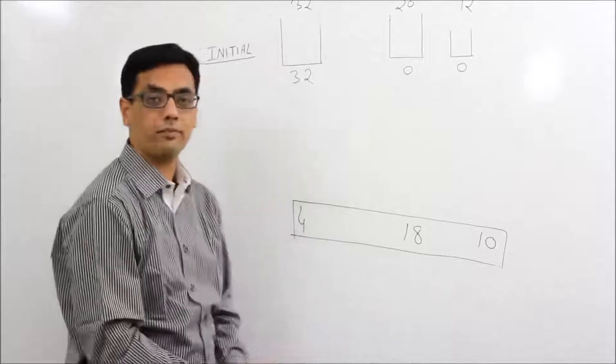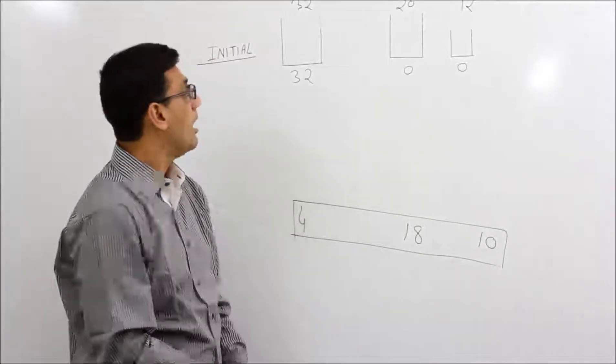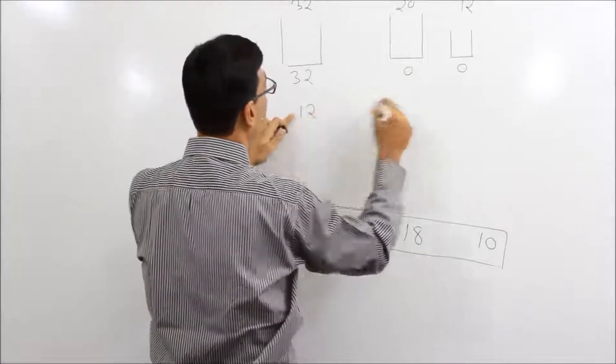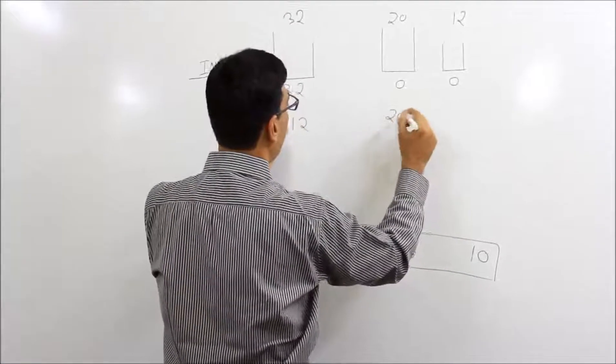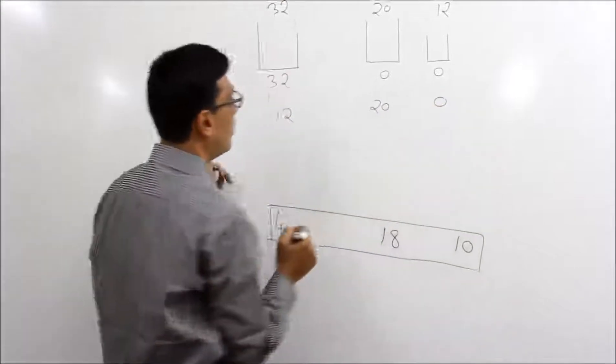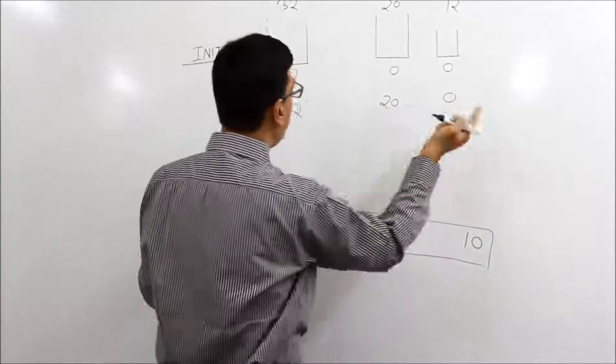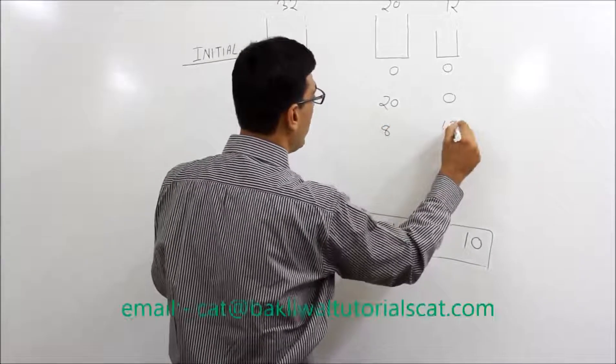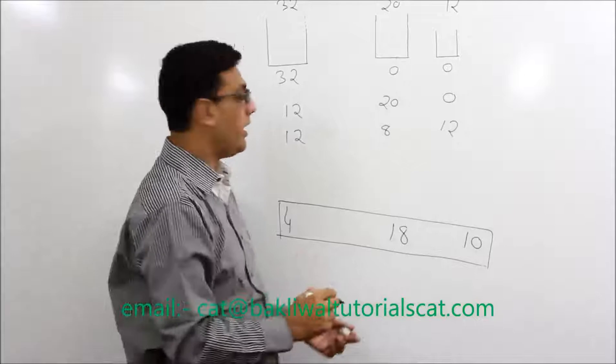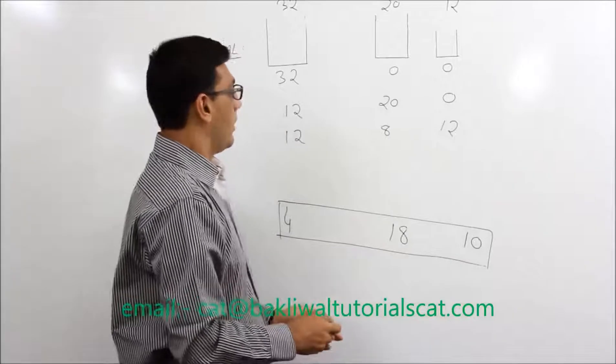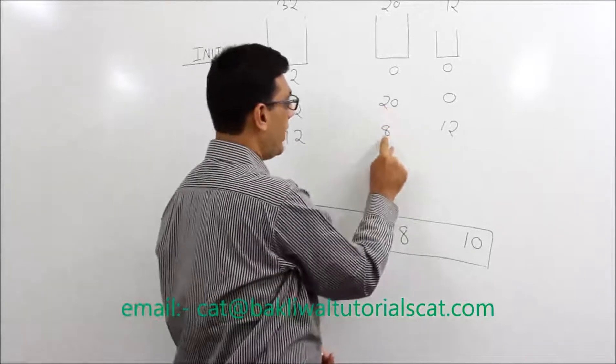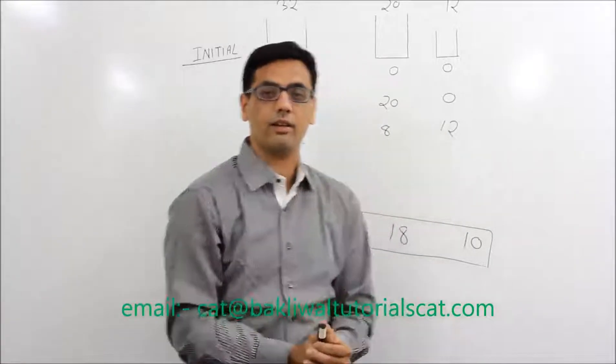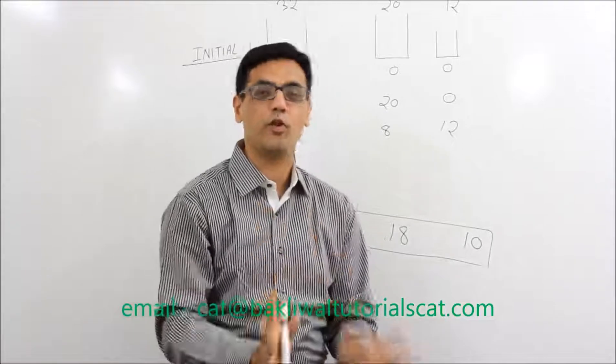How do we do this? So again if you pour this into this, it becomes, let's say if we try it. So this becomes 12, this becomes 20 and this becomes 0. So if I pour this into this, for example, this is 12, this is 8, this is 12. Now if you watch very carefully, this number is 28, 12, 12. These numbers are always multiple of 4.